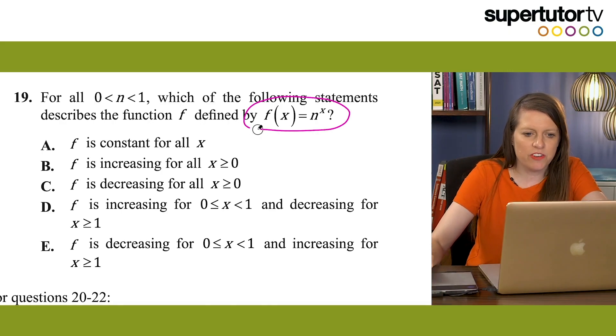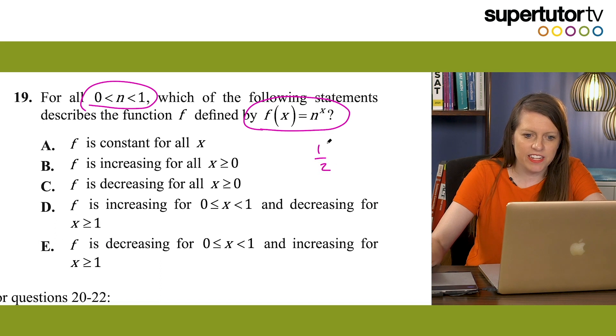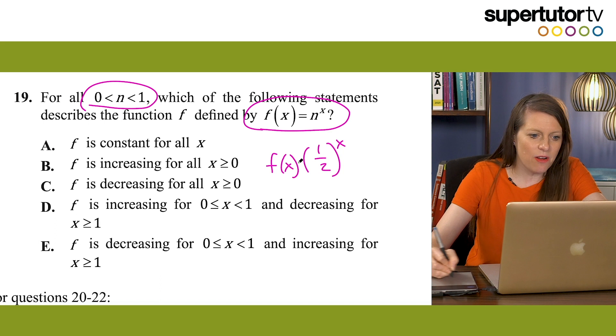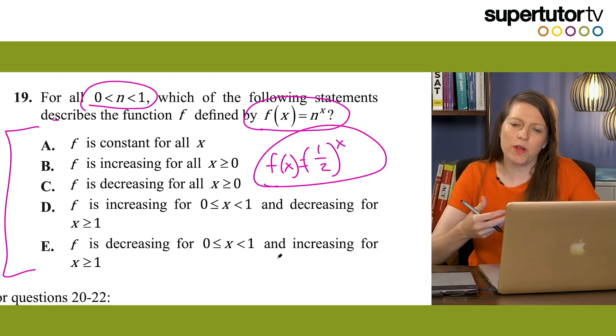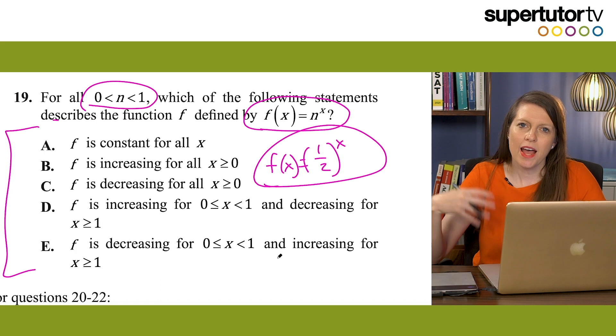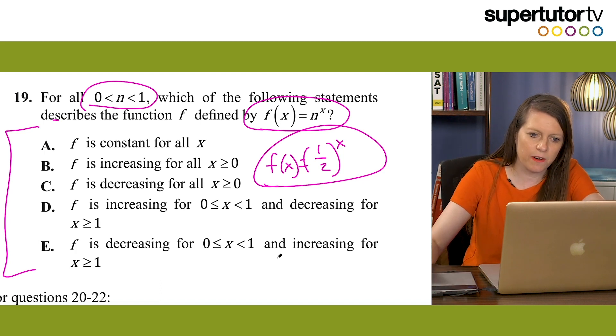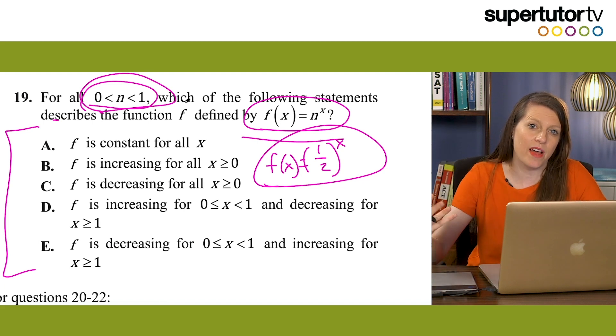The second graph tip is: when in doubt, graph it out. You have a graphing calculator — use that functionality. You can find solutions, vertices, zeros, and trace significant points. If you have a polynomials or quadratics question, graphing is always an out. For example, if you have an exponential function where n is between 0 and 1, just make up a number like one-half, graph y equals (1/2)^x, then read through the answer choices to find which statement must be true for that graph.